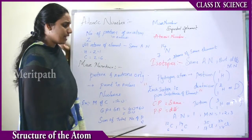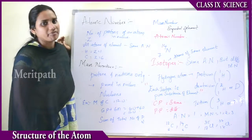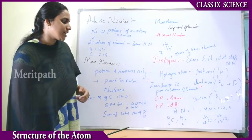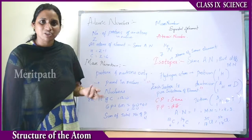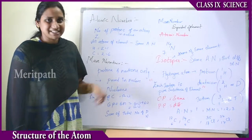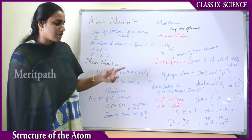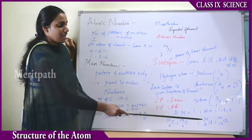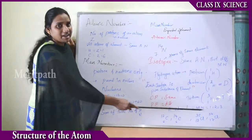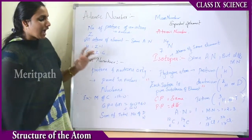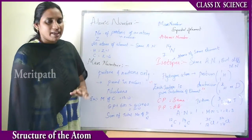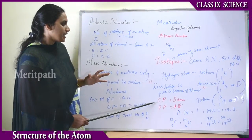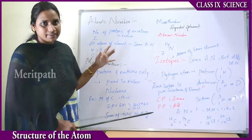Isotopes are the pure substances of an element — protium, deuterium, and tritium are the pure substances of hydrogen. Carbon has 2 isotopes: ¹²C₆ and ¹⁴C₆, differing in mass number. Chlorine also has 2 isotopes: ³⁵Cl₁₇ and ³⁷Cl₁₇, with mass numbers 35 and 37. Isotopes have the same chemical properties but differ in physical properties only.